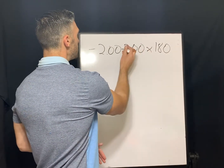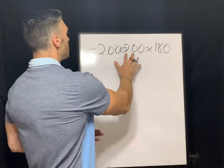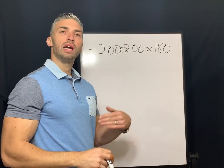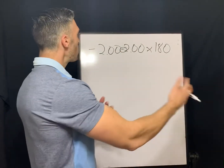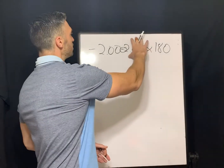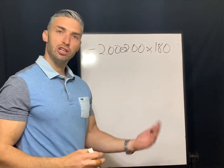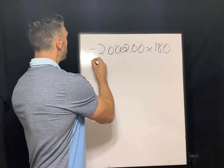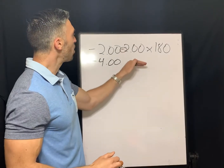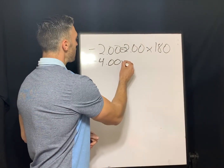What we mean by minus cylinder form is that the cylinder component of the prescription has to have a negative value, because we can also write in plus cylinder. To transpose, the first step is to add your cylinder value to your sphere value. So negative 2 added to a negative 2 algebraically gives you negative 4. The next step is to drop your cylinder power but change the sign, so this negative 2 becomes a plus 2.